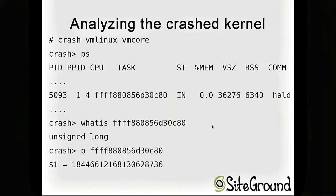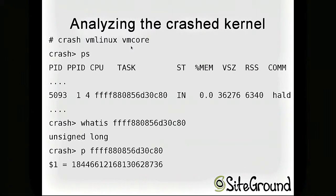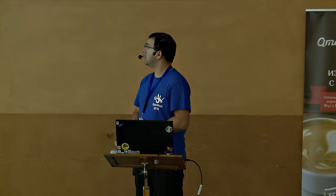If we need more information from the actual core, we can use crash commands. The 'ps' command gives output like this: all processes are listed with process ID, parent process ID, the CPU executing the process, and if the process is currently executing on that CPU there's a marker symbol. It also gives us the address in vmcore for the start of the task_struct for this process.